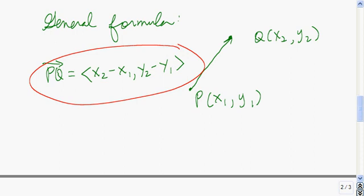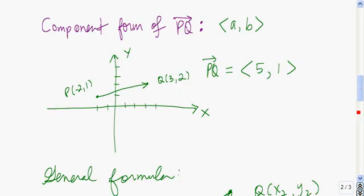In general, the component form of a vector that starts at P and ends at Q is ⟨x₂ − x₁, y₂ − y₁⟩ — the x-coordinate of Q minus the x-coordinate of P, and the y-coordinate of Q minus the y-coordinate of P. We can verify this formula checks out: the x-component of 5 equals 3 − (−2), and the y-component of 1 equals 2 − 1.